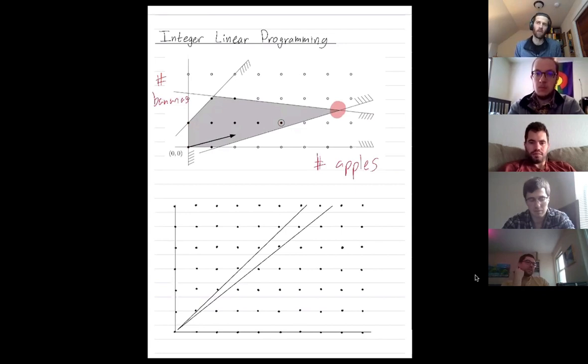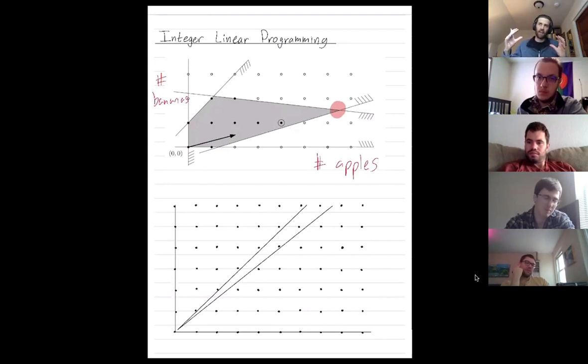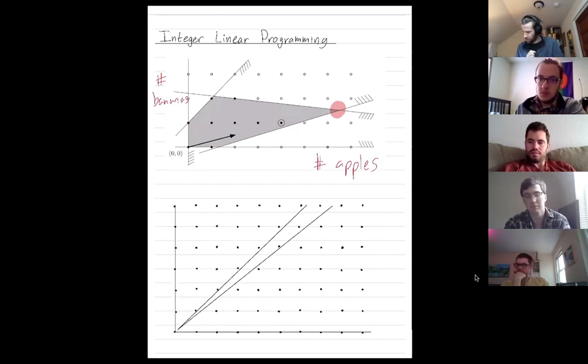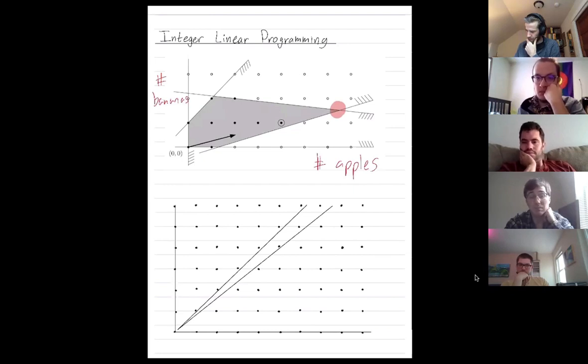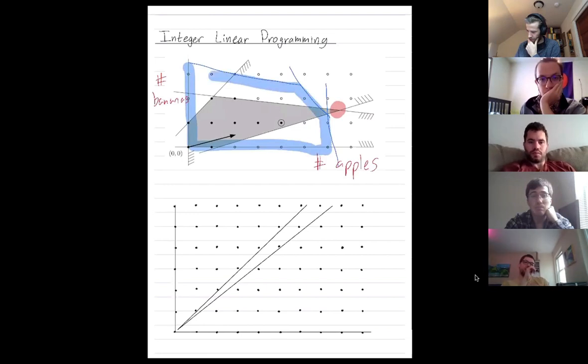We looked at a problem a couple of lectures ago that was on deciding how many ways you want to cut up reams of paper. And yeah, maybe each ream you want to cut in a specific way and not have leftover. In that particular problem that we were looking at, the region that we were optimizing over perhaps looked something like this.